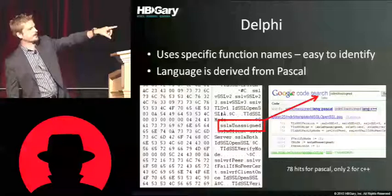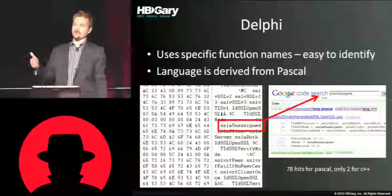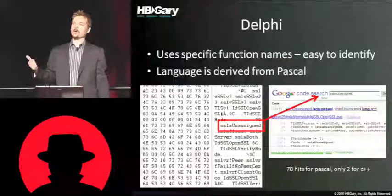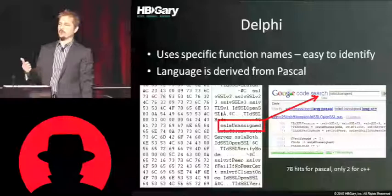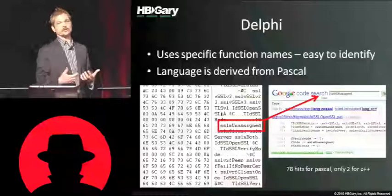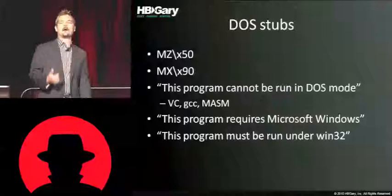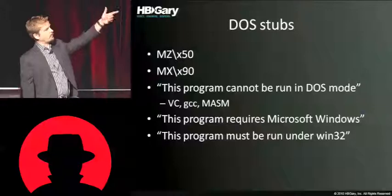Also, Google Code Search is your friend. For example, I took this 'SSLM unassigned' string, did a search on Google Code Search, and found 78 hits in Pascal and only two in C++. I looked at those two C++ ones and they were wrappers for Delphi. Based on the pure statistics of the results, I knew I must be dealing with a program written in Pascal. I really encourage you to use Google Code Search — it's very helpful. I've actually found the source code to the very malware I was reverse engineering once.